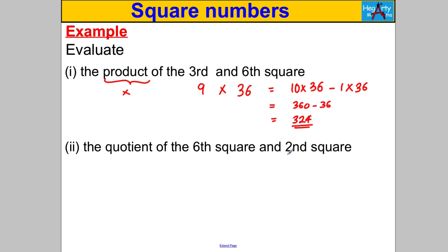The quotient of the sixth square and the second square. Quotient means division. The sixth square is 6 multiplied by 6 which is 36 divided by the second square which is 2 multiplied by 2 which is 4. 36 divided by 4 equals 9 and we're done.